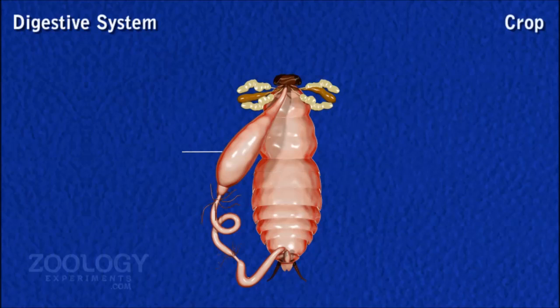Crop. It is a large, thin-walled, pear-shaped sac covering the major part of the abdominal segment. It is the largest part of the foregut. Its internal epithelial and cuticular lining is very much folded, and its outer surface is covered by a network of trachea. The crop acts as a reservoir for storing food.